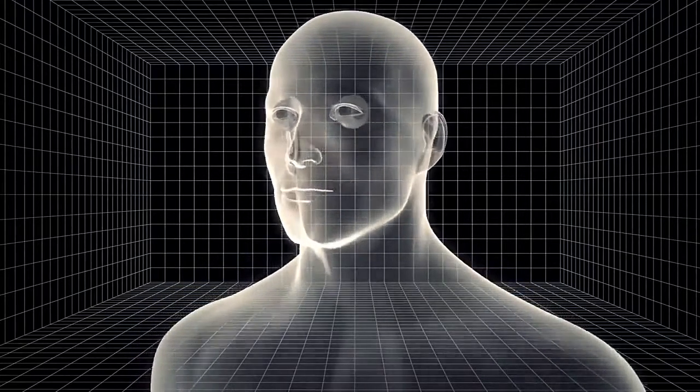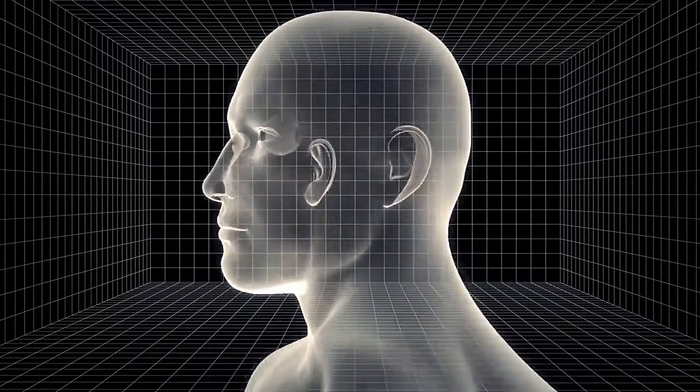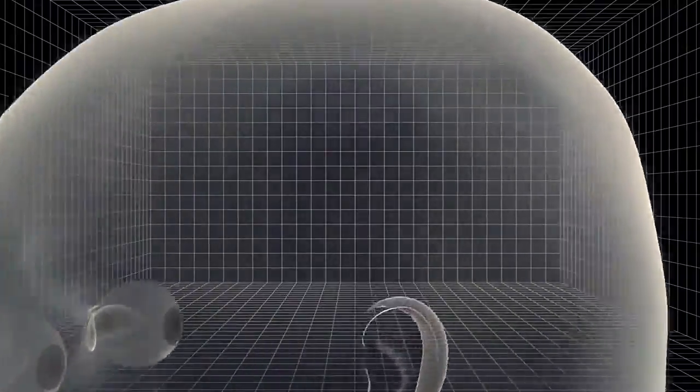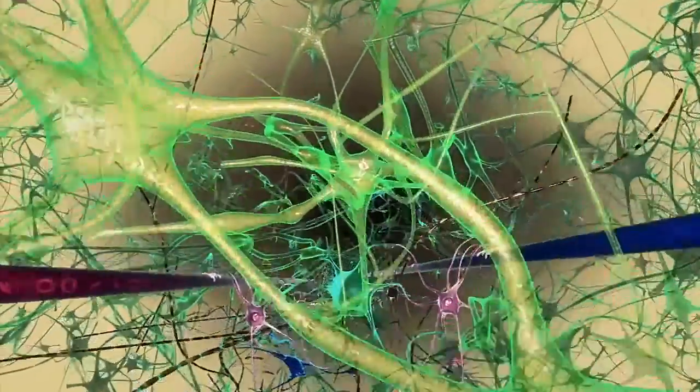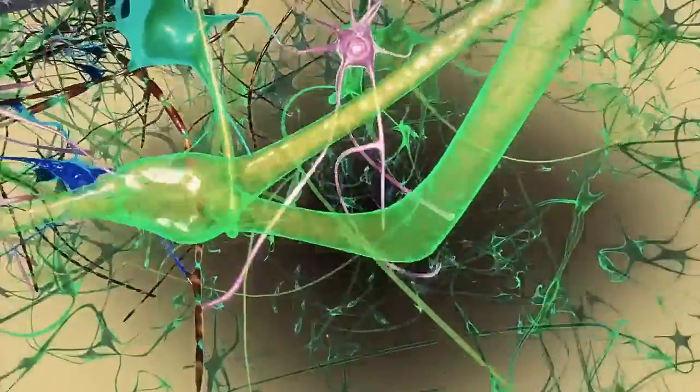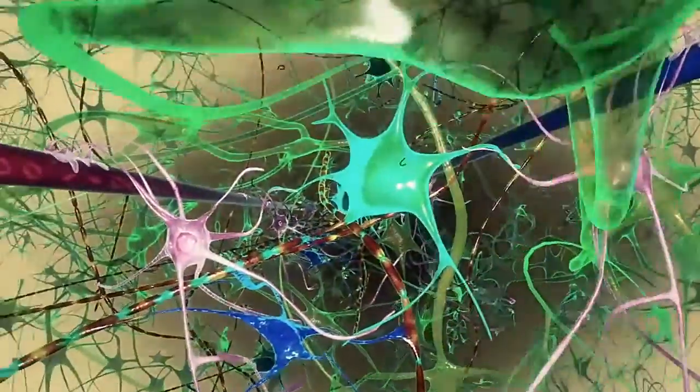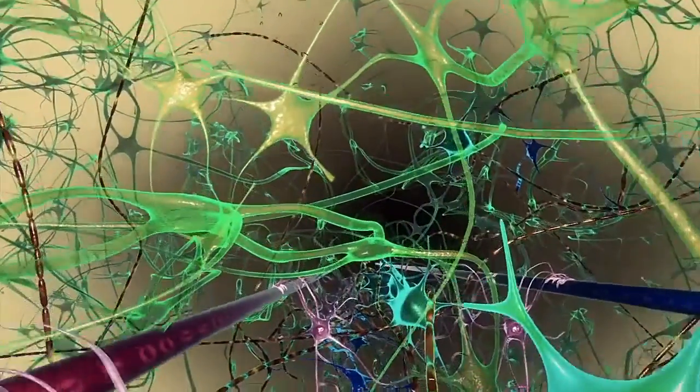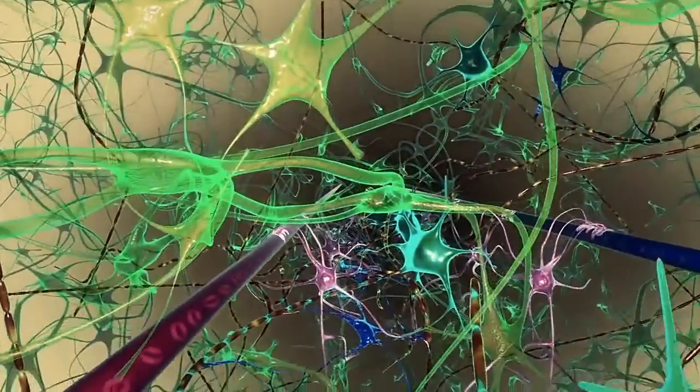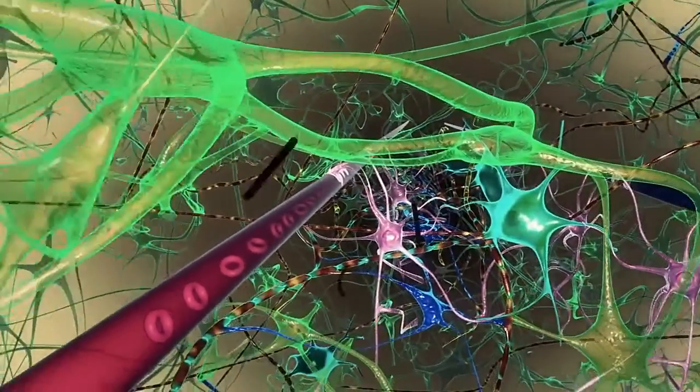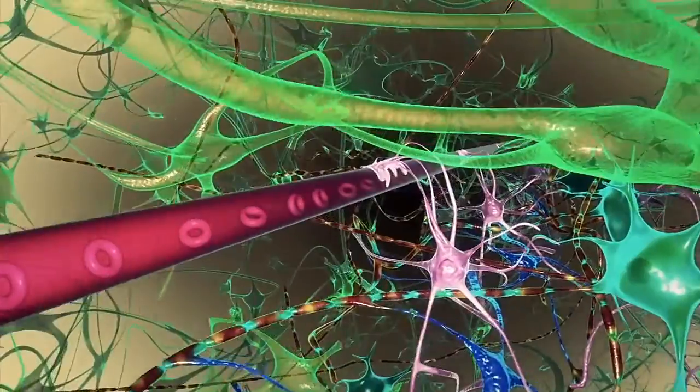Brain waste, including beta amyloids and taus, generates an interstitial fluid during daily cogitation. While some of the waste dissolves in interstitial fluid, the majority must be transported out via cerebral spinal fluid.